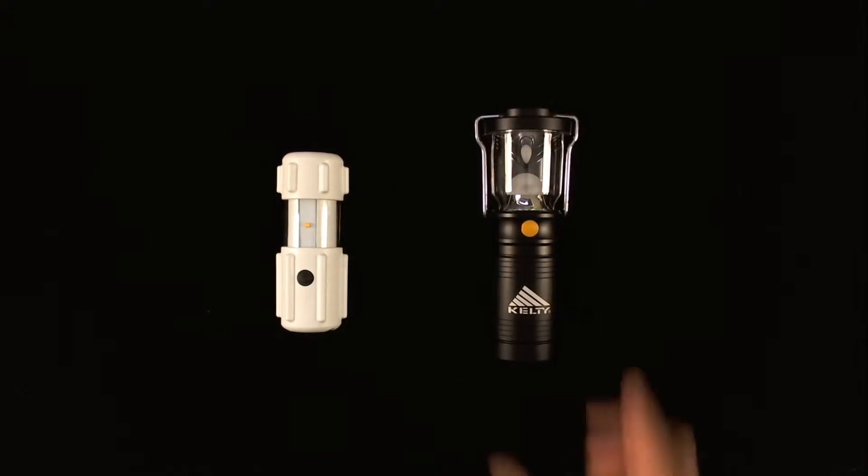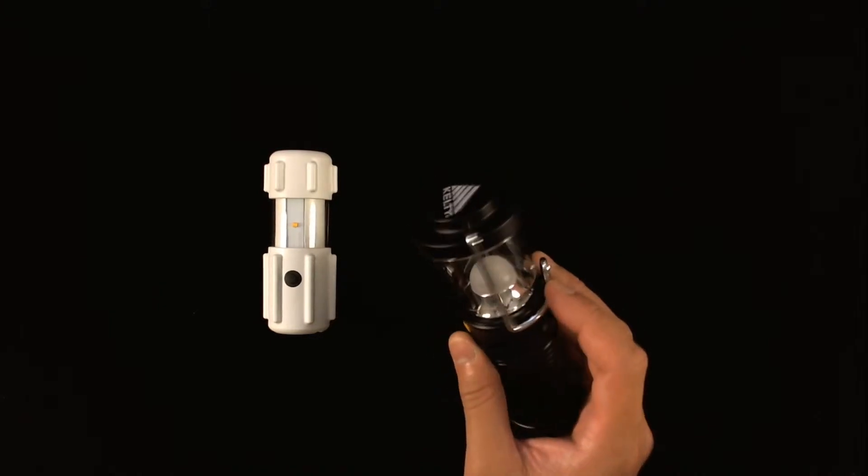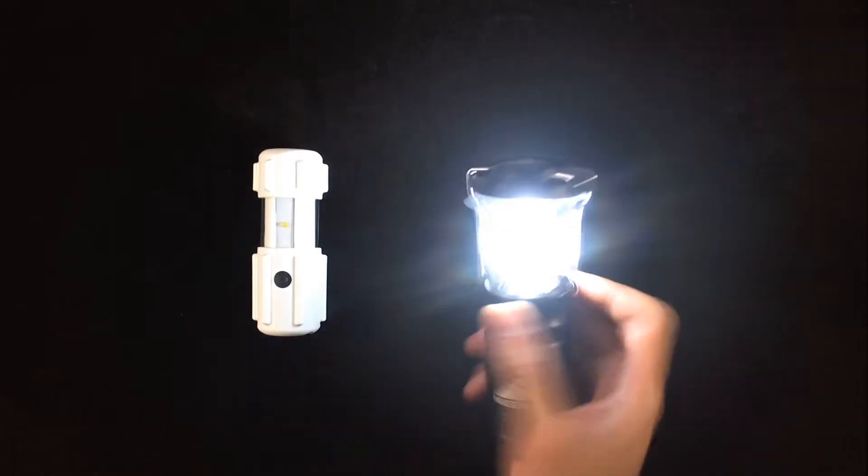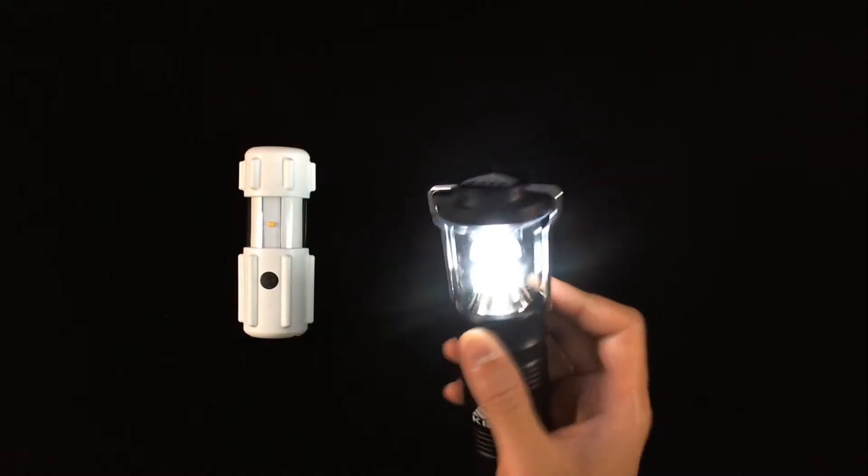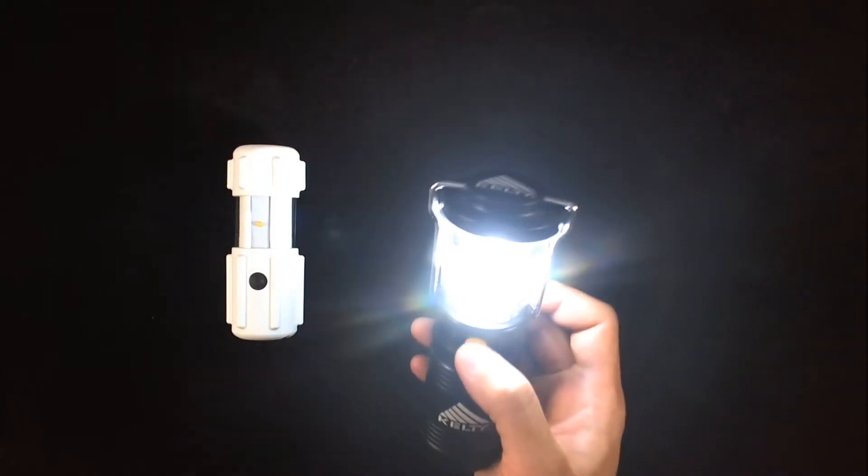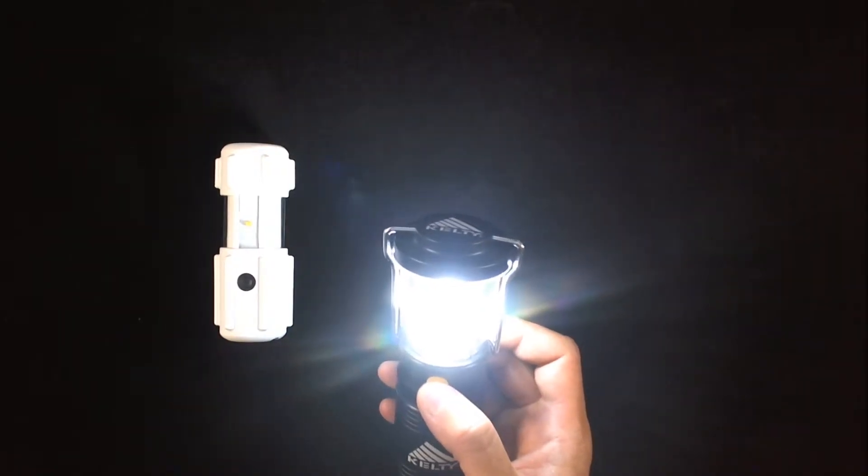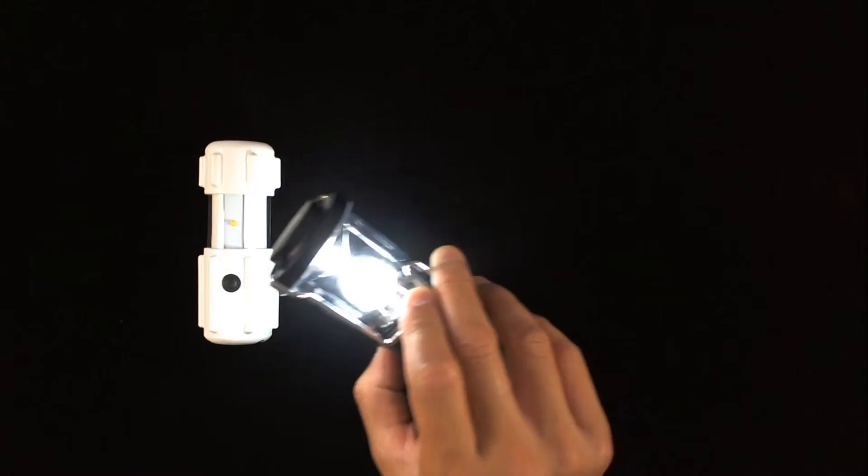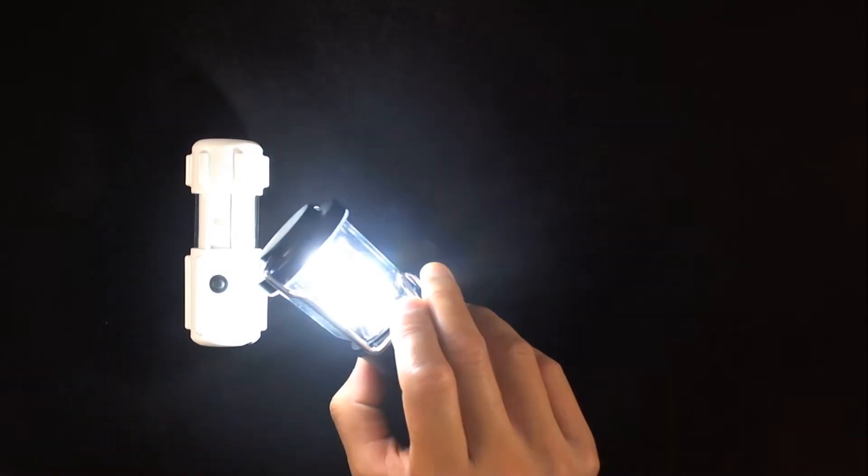Feature wise the Kelty Lumatech Lantern is extremely simple. It only has two brightness modes, high and low. The highest brightness mode is an output of 30 lumens whereas the lowest brightness mode is an output of 6 lumens. The rated runtime for the Kelty Lumatech at the high mode is 13 hours and the rated runtime for the low mode is 99 hours.